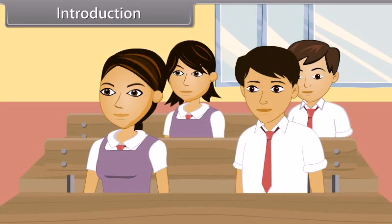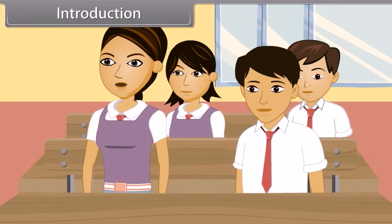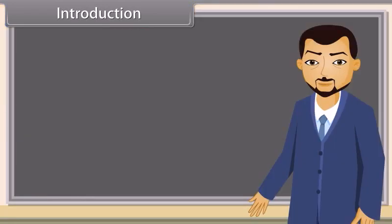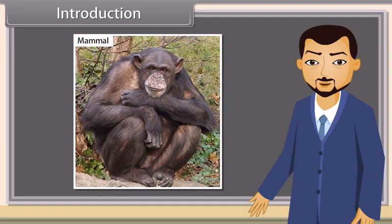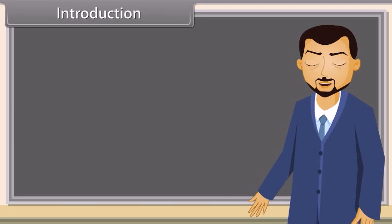Good morning teacher, good morning students. Today we will learn about organisms and their population. Organisms are the living things that are capable of reacting to stimuli, reproduction, growth, and homeostasis. Examples of organisms are mammals, birds, bacteria, fungi, etc. The population of organisms has certain characteristics, and on the basis of those characteristics we define the population of organisms.